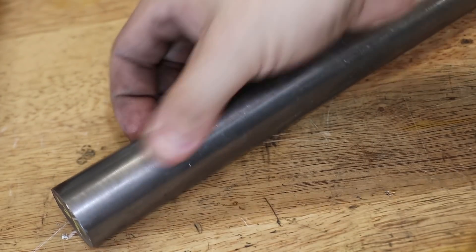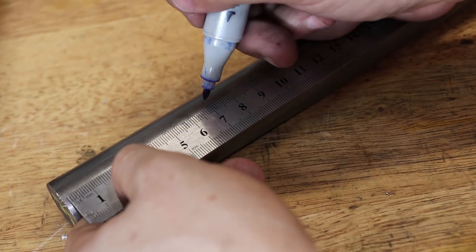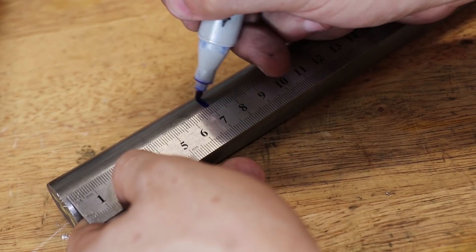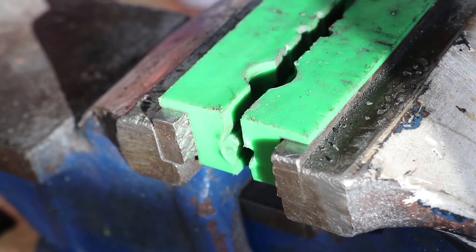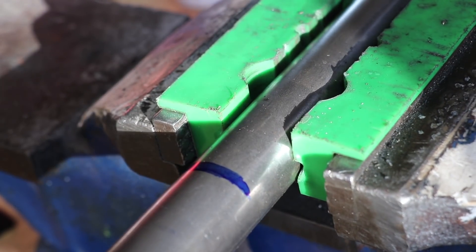I'll be making the arbor from this cold drawn 1214 steel. It's sufficiently strong and the arbor doesn't require a really strong material and it machines up really nicely.